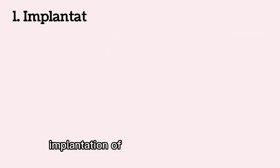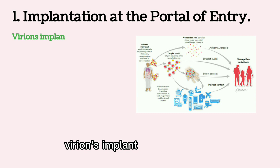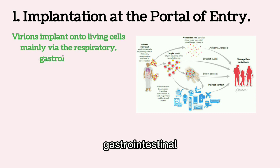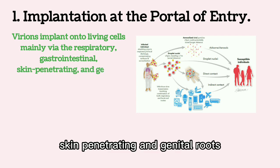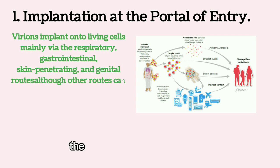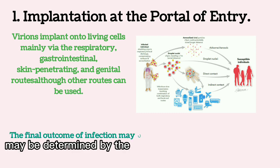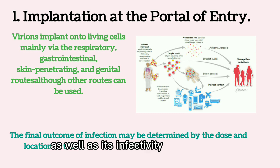Implantation of virus at portal of entry: Virions implant onto living cells mainly via the respiratory, gastrointestinal, skin-penetrating, and genital routes, although other routes can be used. The final outcome of infection may be determined by the dose and location of the virus, as well as its infectivity and virulence.